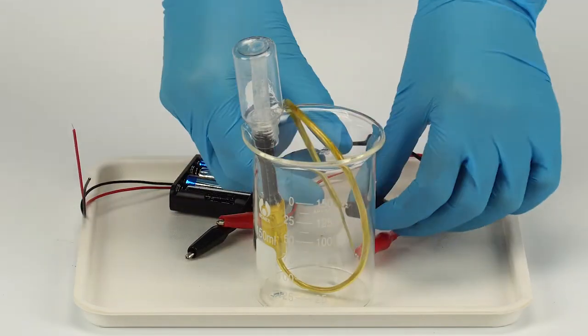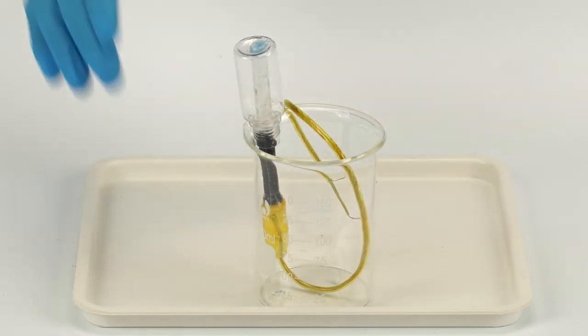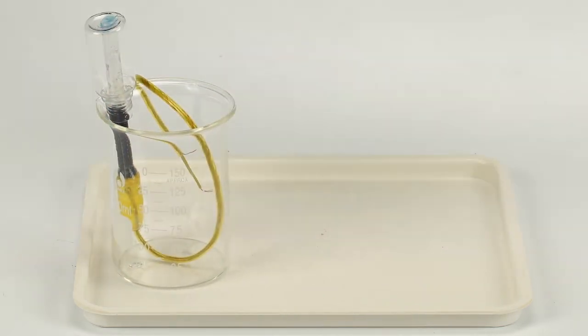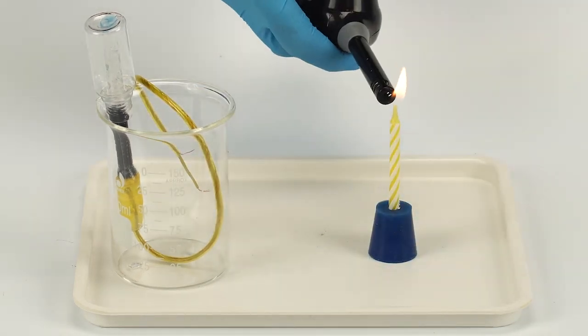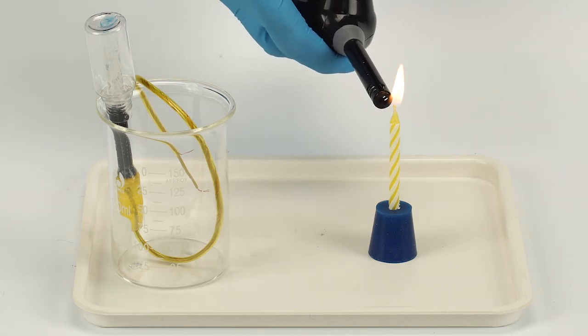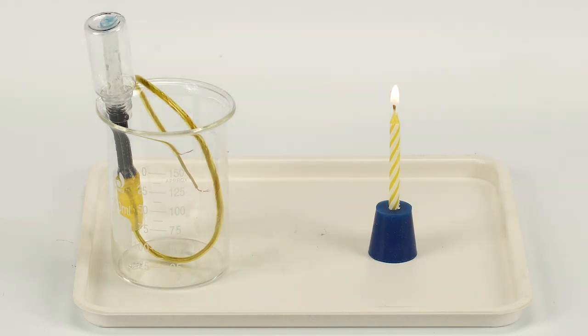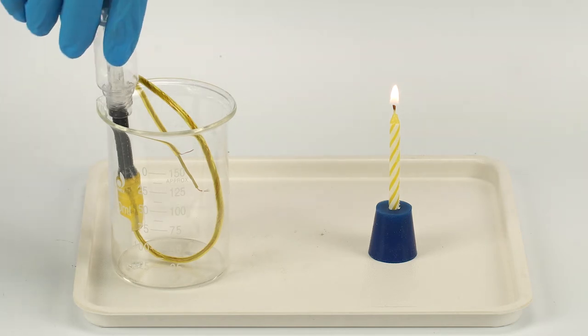Disconnect the crocodile clips from the battery holder. Now try to extinguish a candle using the reaction between hydrogen and oxygen. Put a candle in the rubber stopper with one hole. Light the candle. Take the bottle off the pipette and carefully bring it close to the candle flame.